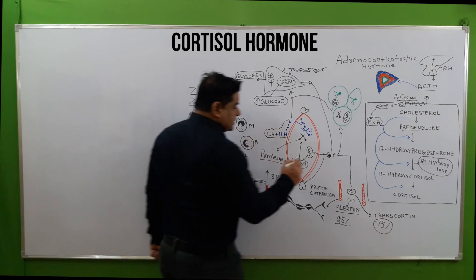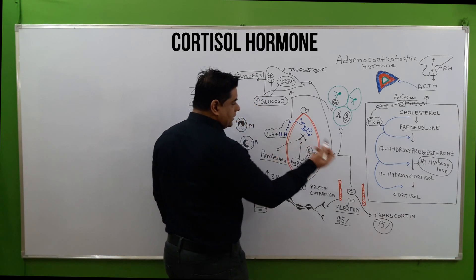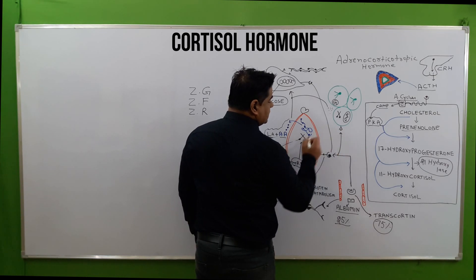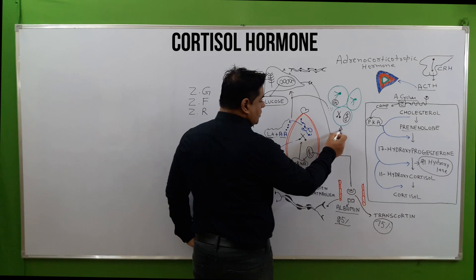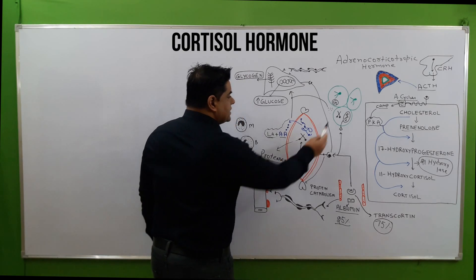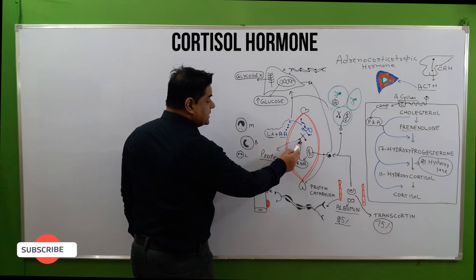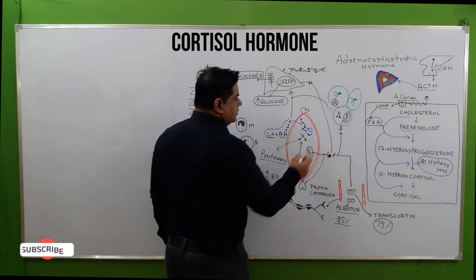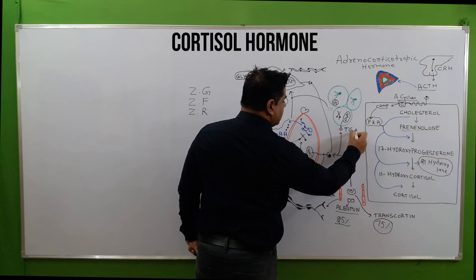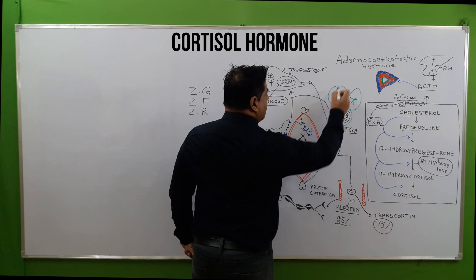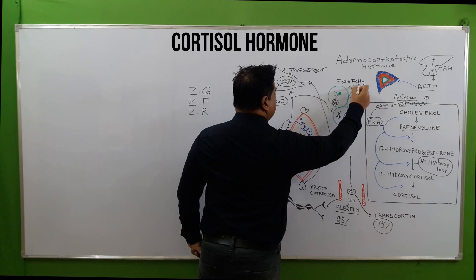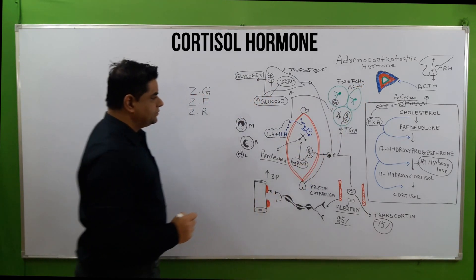Similarly, cortisol also has receptors on adipose cells. Cortisol binds on the adipose membrane and stimulates the nuclear machinery to produce cutter enzymes. These enzymes break down triglycerides into glycerol and free fatty acids.